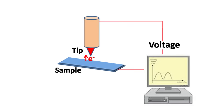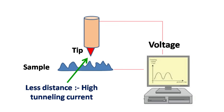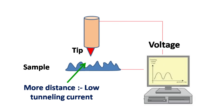Based on the recordings of the tunneling current, information about the surface of the specimen is obtained. The magnitude of the tunneling current depends on the distance between the tip and the sample. The tunneling current is high when the distance is less, and decreases as the distance between the tip and the sample increases.